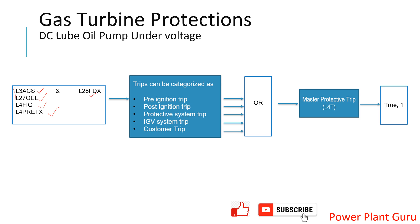Up to this point, we have already covered the previous two videos on pre-ignition trip topics related to GCV and SRV position feedback versus command mismatch, EOP MCC feedback, and the ignition timer failure to ignite. All these logics were covered in the past two videos, which you can find if you want to watch them. Another important topic is L4PRETX, which comprises three to four different parts, so I wanted to make a separate video on that to avoid confusion.